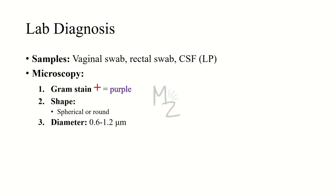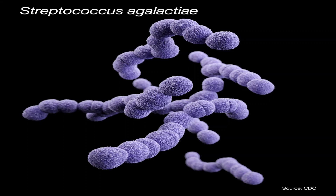Lab diagnosis requires certain samples — we need vaginal or rectal swabs, and also CSF (cerebrospinal fluid) due to meningitis, obtained via lumbar puncture. On gram stain, the specimen is gram positive and purple colored. Under microscopy it is spherical and round in shape, varying in diameter from 0.6 to 1.2 micrometers, occurring in chains and purple colored.